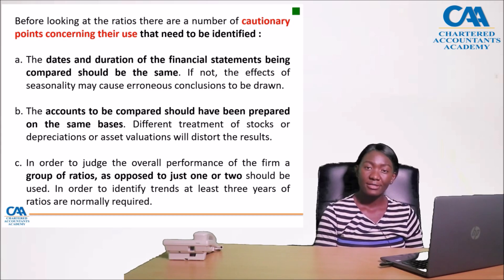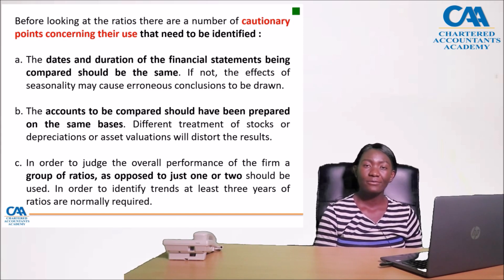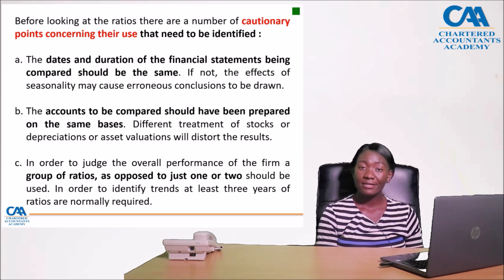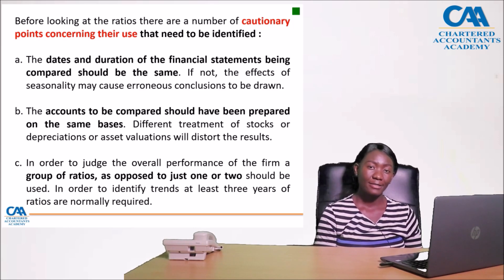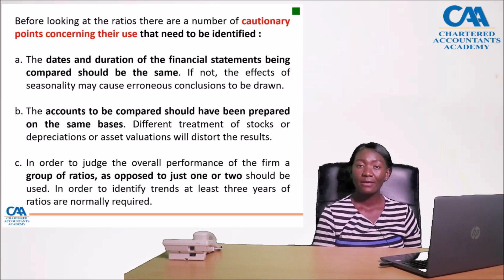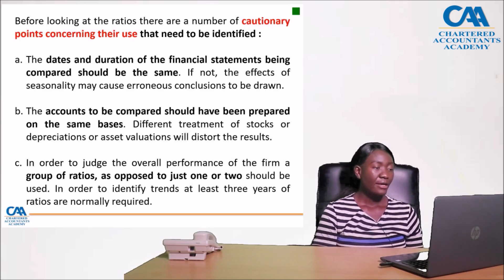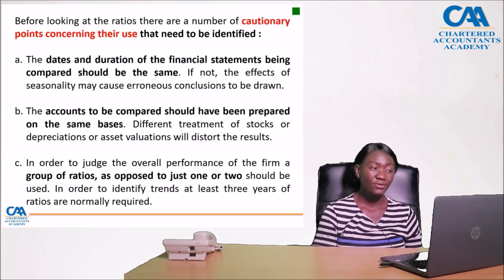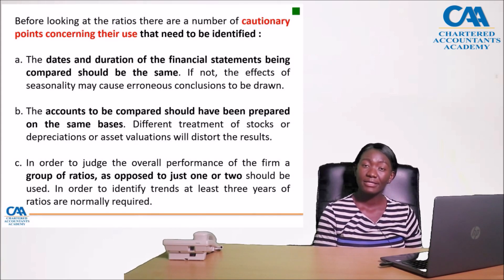Different treatment of stocks, depreciation, or asset valuations will distort the results — a company may seem unprofitable due to differences in preparation basis. In order to judge overall performance, a group of ratios as opposed to just one or two should be used. To identify trends, at least three years of ratios are normally required. Large firms operating in different divisions and industries make it difficult to develop meaningful industry averages.